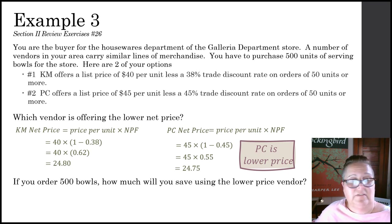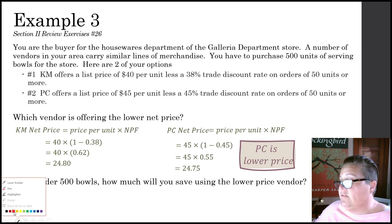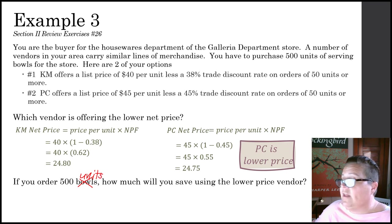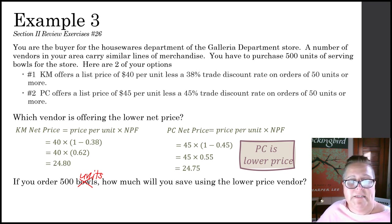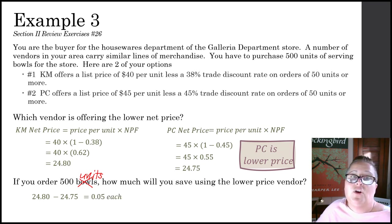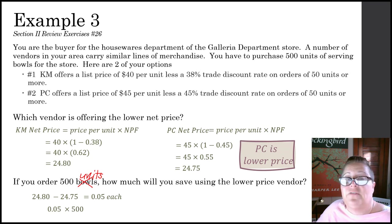How much will you save for 500 units by choosing PC? PC is the lower price by $0.05 per unit: $24.80 minus $24.75 equals $0.05. That $0.05 savings times 500 units equals $25 in total savings. It's not a ton of savings, but if you're in a business, every little bit helps.